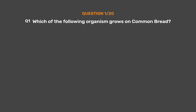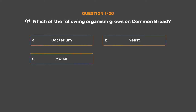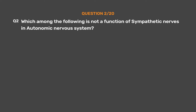Which of the following organisms grows on common bread? Option A: Bacterium. Option B: Yeast. Option C: Mucor. Option D: Virus. The correct answer is Option C: Mucor.